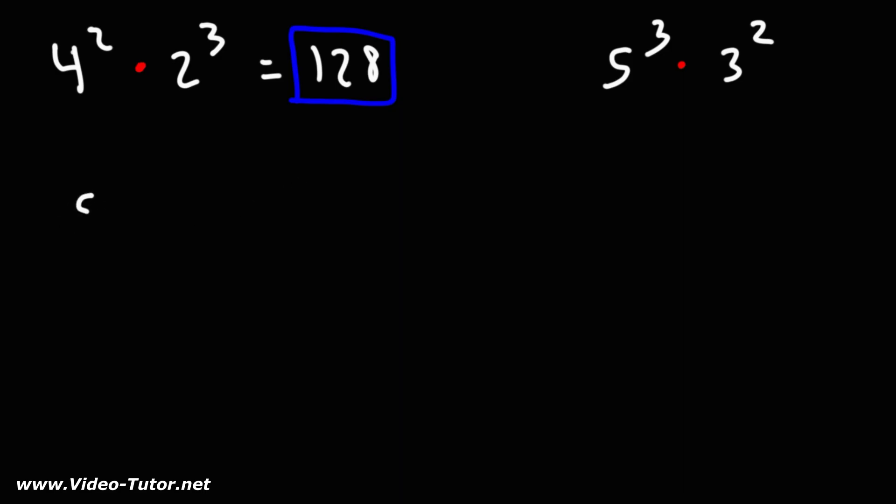5 to the 3rd, or 5 cubed, means that we're multiplying three 5s together. 3 squared is 3 times 3.